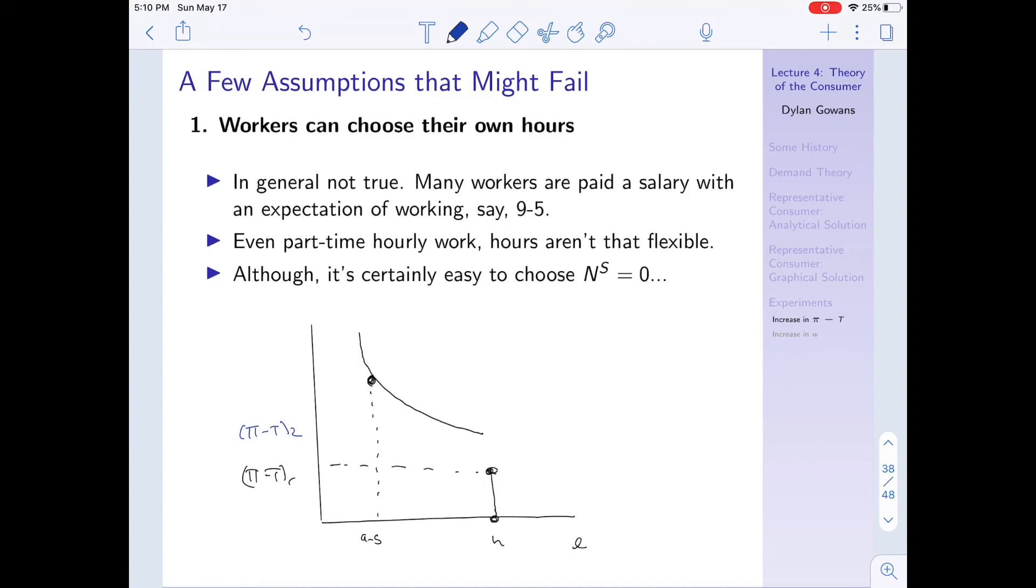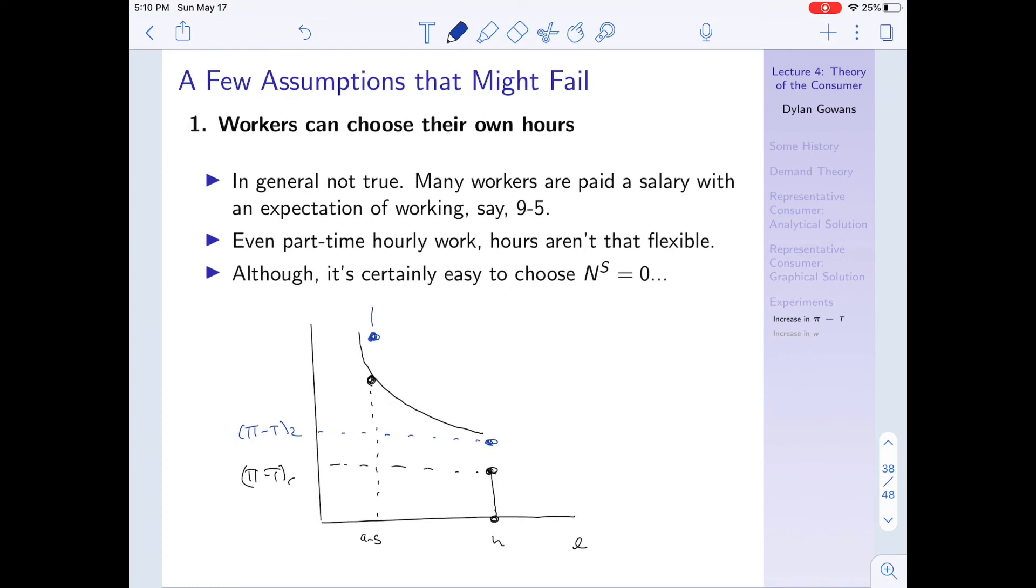Well now you have the two following points. So let's say it increases to here, and this point increases also as well. And so you still will probably choose to work nine to five, right? You don't have that much leeway, and certainly you don't want to quit and earn nothing, right? You would need a particularly large increase in your non-wage income to want to quit and earn nothing. So that's one assumption that might fail.